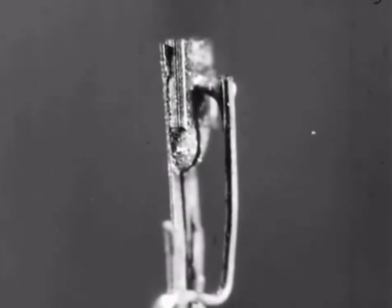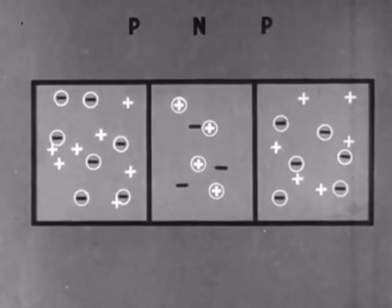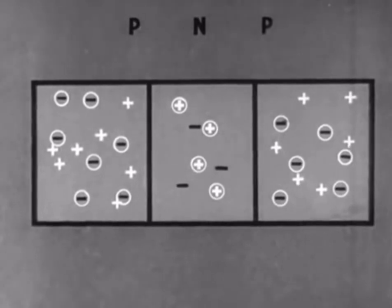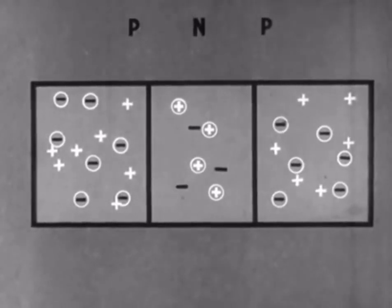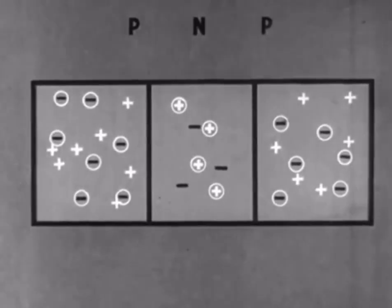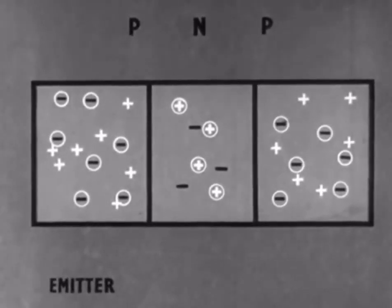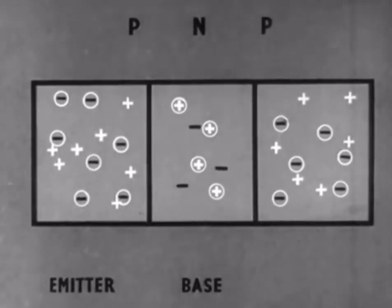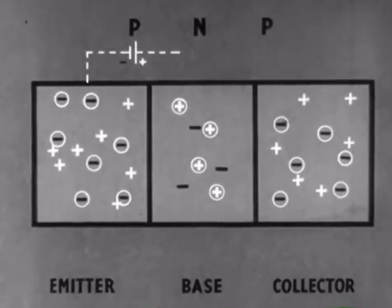To make this possible, we must add a third component. And when we do this, we have what is called the transistor. This diagram shows a piece of n-type germanium sandwiched between two pieces of p-type germanium. The p-type on the left is known as the emitter. The n-type in the middle, the base. And the p-type on the right, the collector. As before, we can represent the charges on the three components by imaginary batteries.